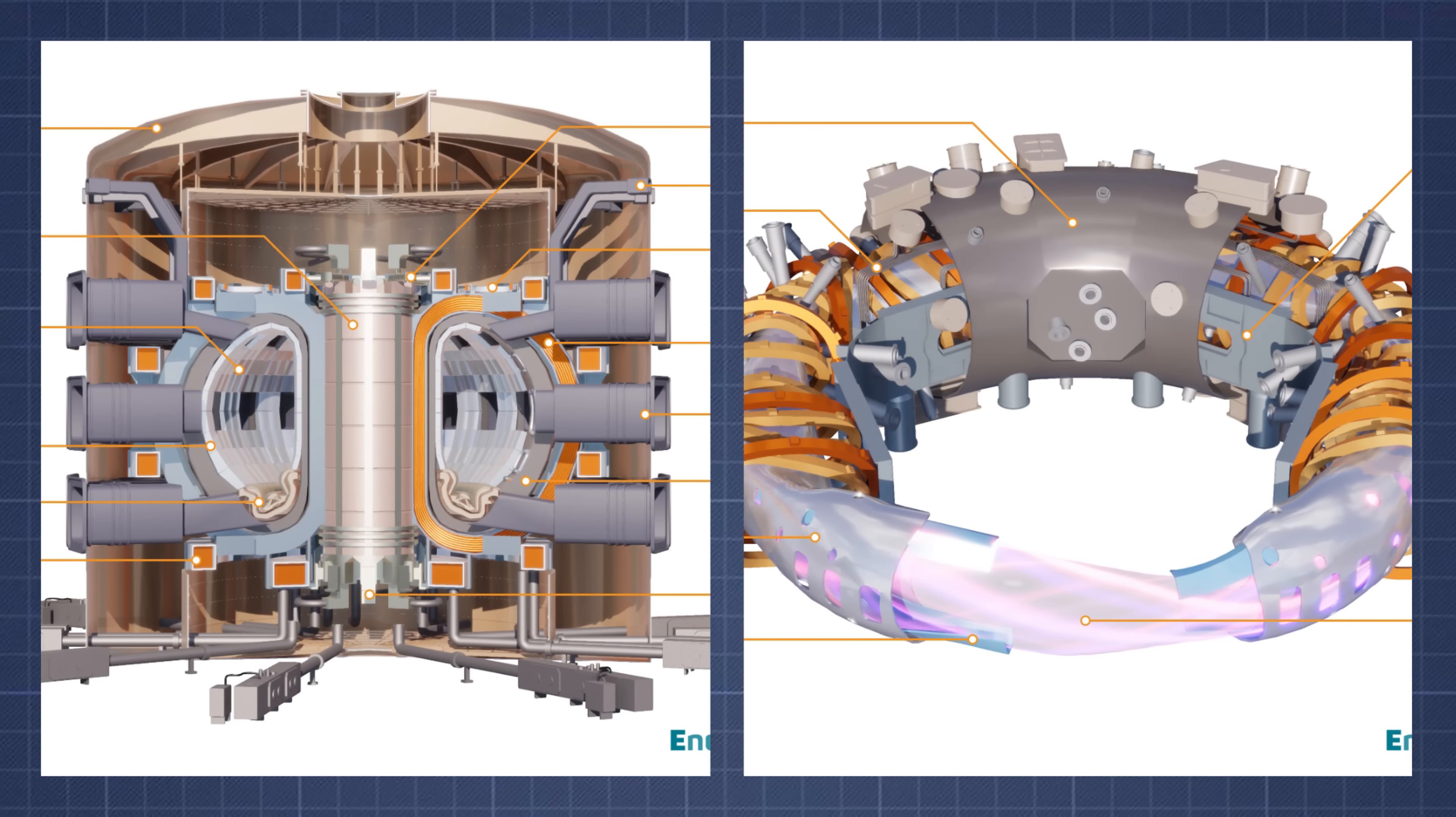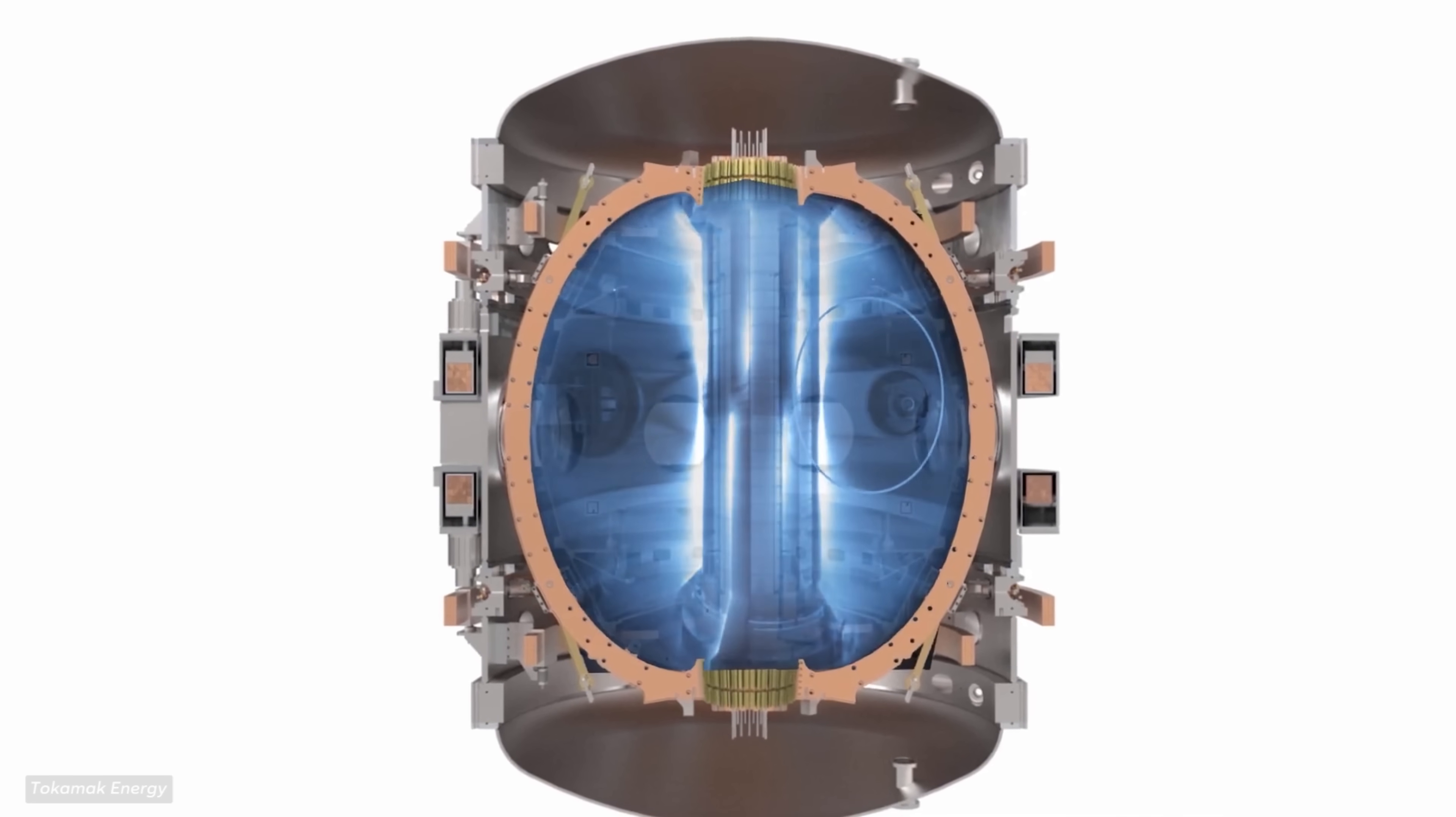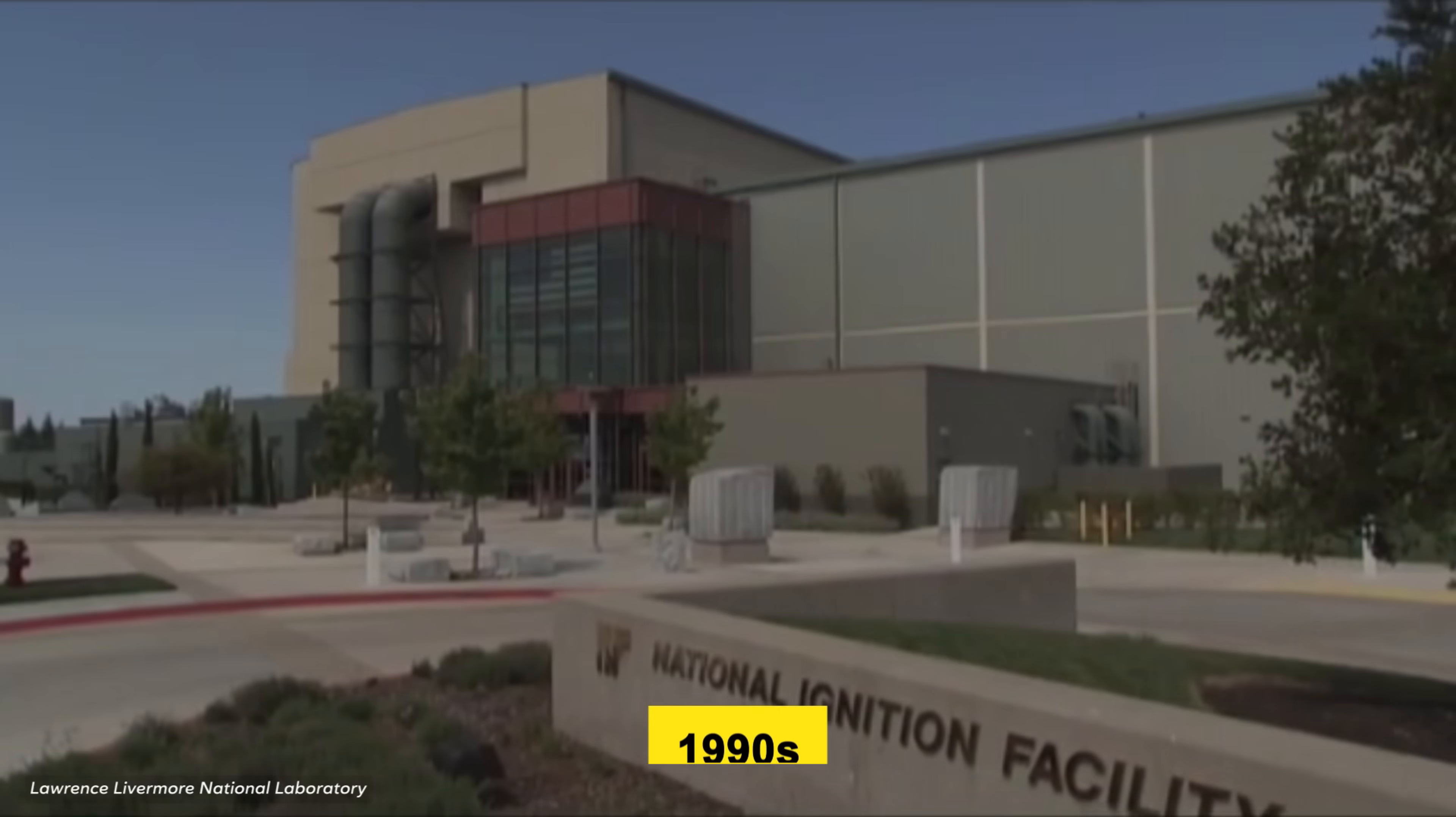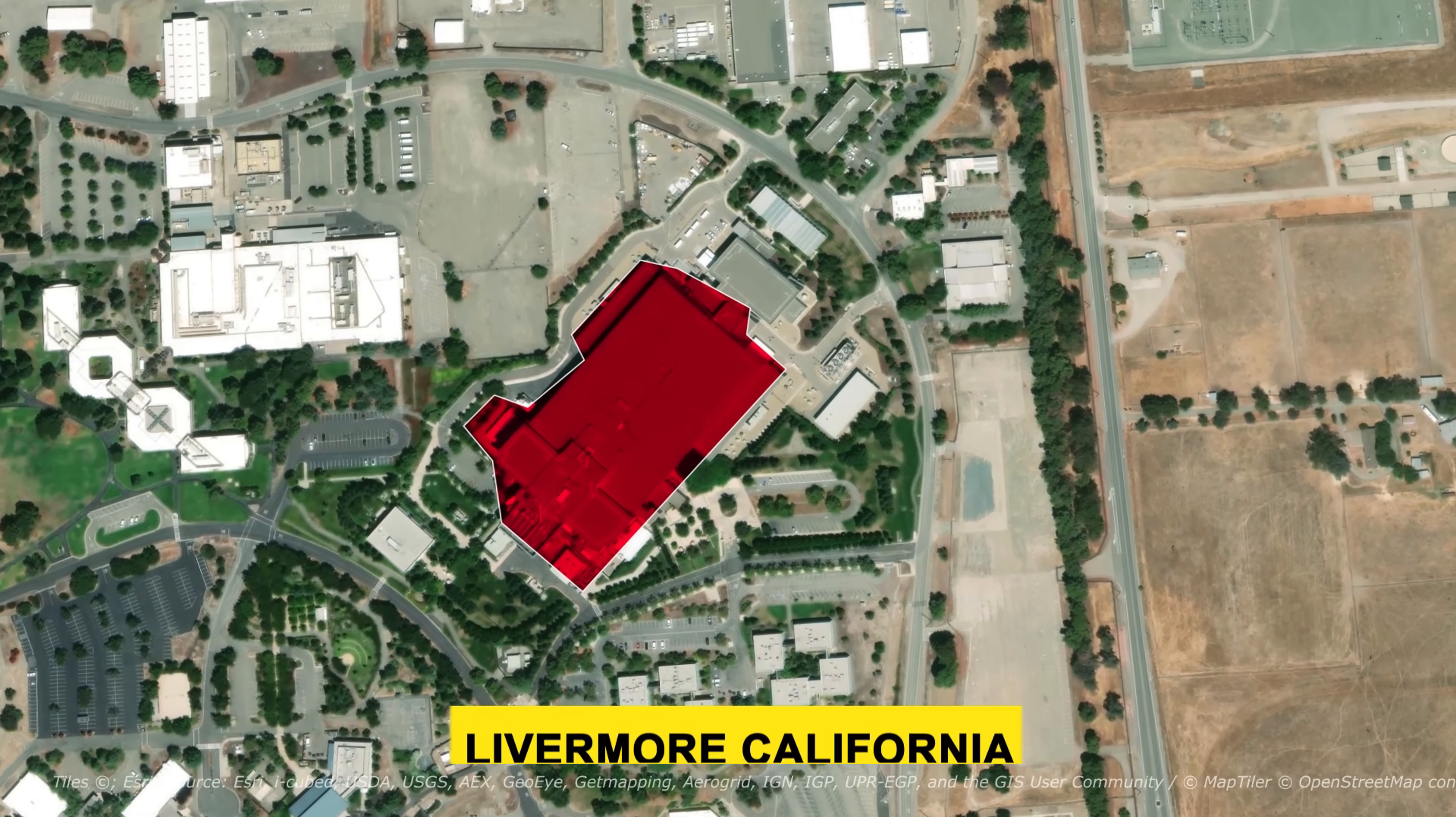Magnetic fusion reactors like tokamaks and stellarators became the main approach. These reactors use powerful magnets to hold plasma in place while it gets hot enough for fusion. The US took a different path too. In the 1990s, it began building the National Ignition Facility, a massive laser fusion research center in Livermore, California.